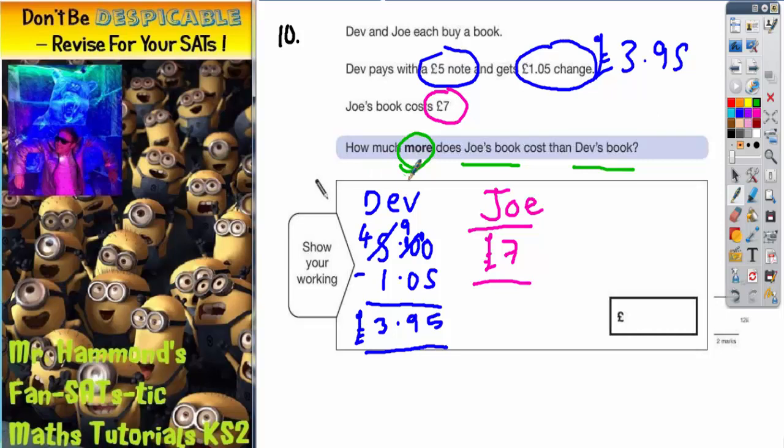How much more does Joe's book cost than Dev's book? Joe's book was £7. Dev's book was £3.95. So how much more is £7 than £3.95? That's going to be a subtraction.